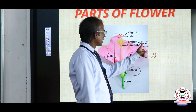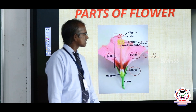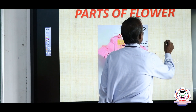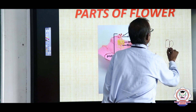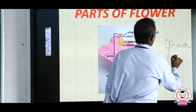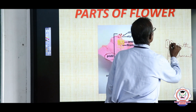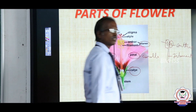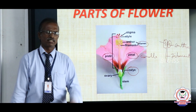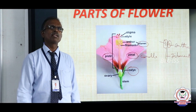The third whorl is stamen, inner to the previous whorl. The stamen consists mainly of two things: anther and filament. The anther is made up of very minute yellow powdery-like substances called pollen grains. The pollen grain contains male gametes. So stamen is the male part of the flower.